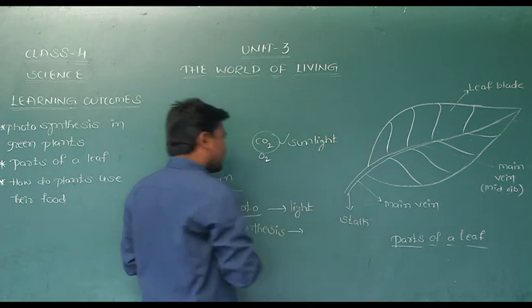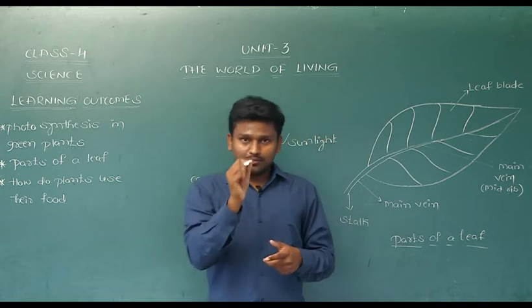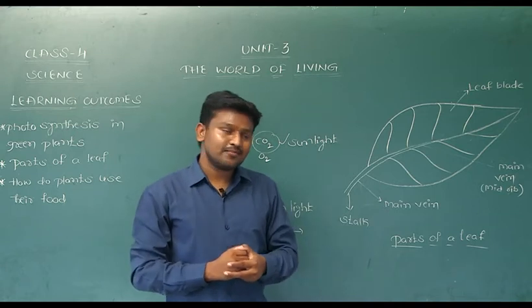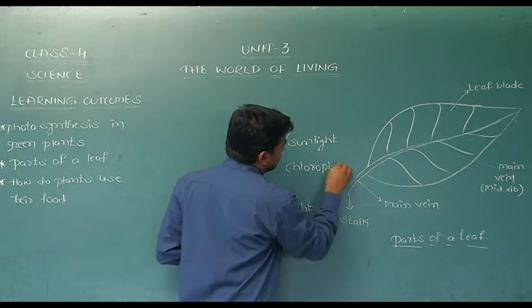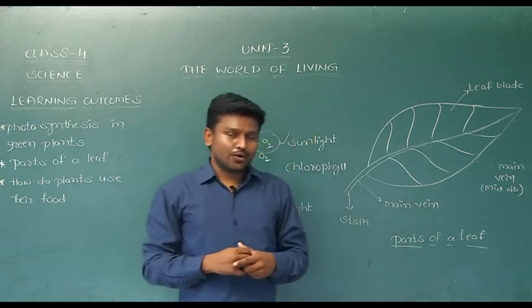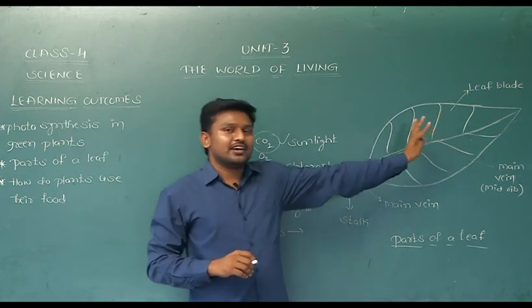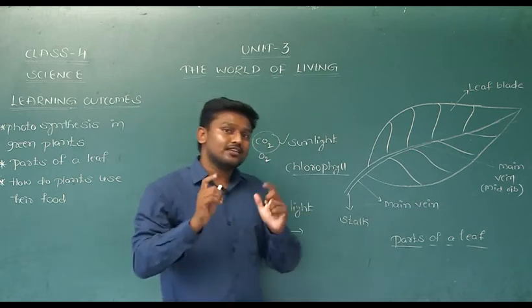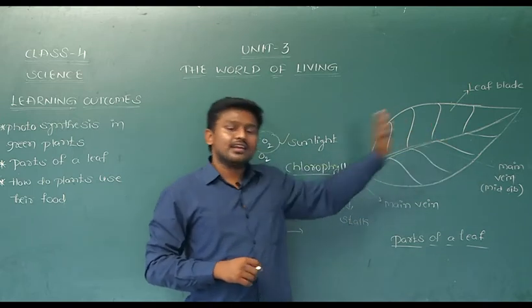Carbon dioxide, sunlight, and other than that, there is one important factor. What is that? A colored pigment. What is its name? That is chlorophyll. Before introducing this word, I have to ask you one question: why are leaves generally in green color? Due to the presence of chlorophyll in the leaves. Chlorophyll is present in the leaves, and that's the reason leaves are in green color.